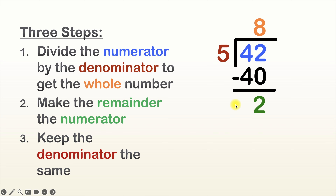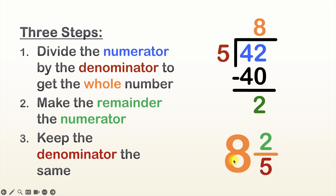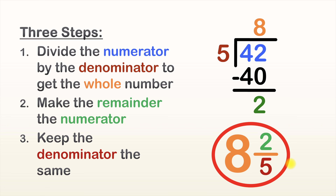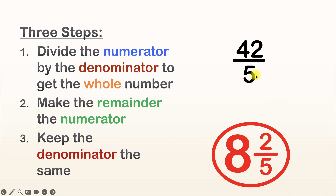Now we can start writing our mixed number. Remember that the number on top of the long division is going to be the whole number, so let's write that nice and big. Next, the remainder is going to be the numerator, so let's put the two next to the eight, a little bit high because it's going to be the top of our fraction. And step three is to keep the denominator the same — our denominator was five, so we put five right under two. The improper fraction 42 over five is equal to the mixed number eight and two fifths.